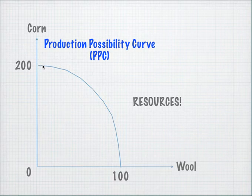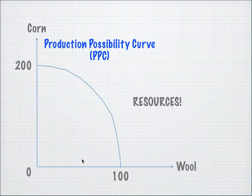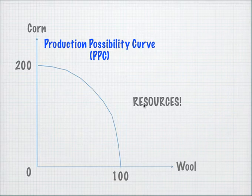Basically, if you look at this line here, any point along this curve can be produced by this country, or in some cases a firm. The firm can choose to produce any point on this line. It can also produce any point within or under this curve, because that is within its production possibility limits. However, if it were to produce inside the curve, it would not be very efficient because it's not making full use of its available resources.